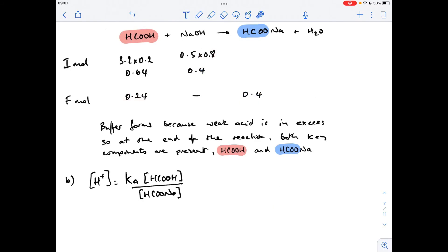Okay, so moving on to the calculation now. So we've got to calculate the pH of the buffer formed. So there's my acid over salt expression. The H plus concentration of a buffer is equal to Ka times the concentration of the acid divided by the concentration of the salt.